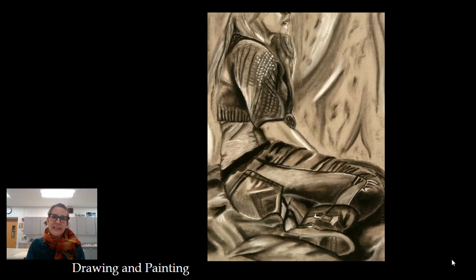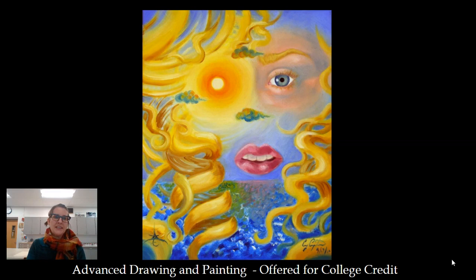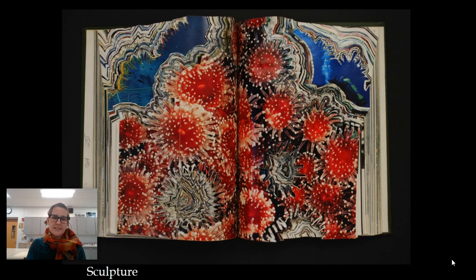Drawing and Painting deals primarily with observing. We focus a lot on drawing in the beginning of the year and painting more towards the end. Advanced Drawing and Painting is offered for college credit if you're interested in continuing in art. Sculpture class involves three-dimensional work in a variety of materials — this is a book that has been carved into. And Ceramics, which is clay.